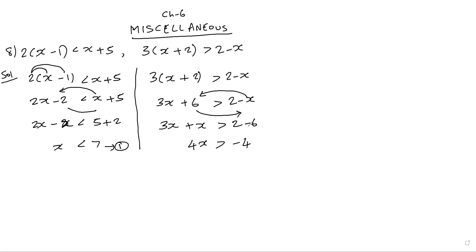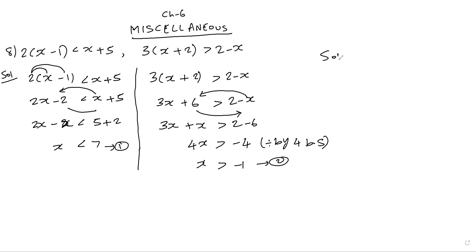Dividing both sides by 4, we get x greater than minus 1. So the solution of the second equation is x greater than minus 1. Combined with the first equation, x less than 7, and using open brackets since the inequalities are strict, we place both results on the number line.